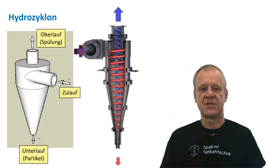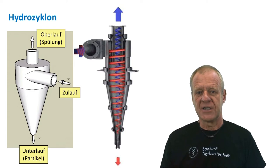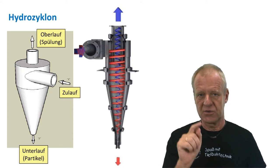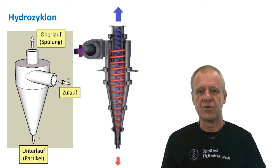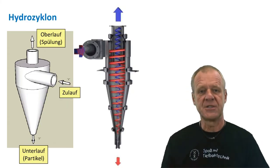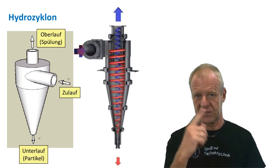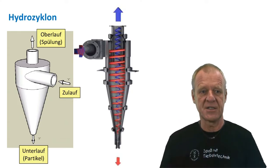You can see here in the picture how it really looks. You can clearly see the inlet and the upper and the lower outlets. You can also clearly see the outer primary vortex and the inner secondary vortex.